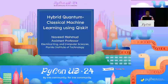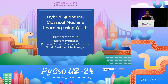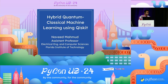Hi everyone. My name is Naveed Mahmoud, and I'm an assistant professor at Florida Institute of Technology. Thank you for being here. Today I would like to talk about my work, which is on quantum classical machine learning using Qiskit. Qiskit is an open source SDK that enables the development of quantum algorithms and quantum circuits, and this will be an introductory talk on how we can build models, both classical and quantum, using this Qiskit library, which is Python-based.